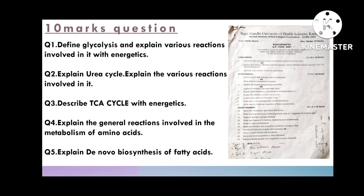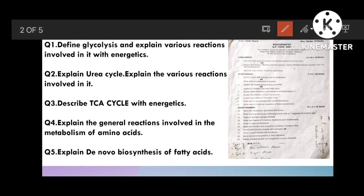Write the reactions - energetics and reactions are very important. Explain urea cycle and various reactions involved in it. Then describe TCA cycle, also known as tricarboxylic acid cycle or Krebs cycle. Explain general reactions involved in metabolism of amino acids - amino acid metabolism is very important, including transamination and deamination. Already uploaded the answers, just go and watch that.